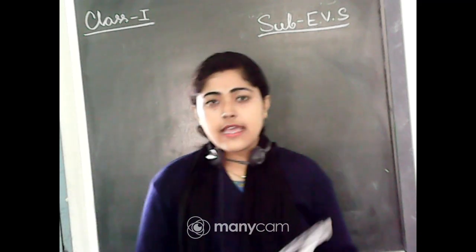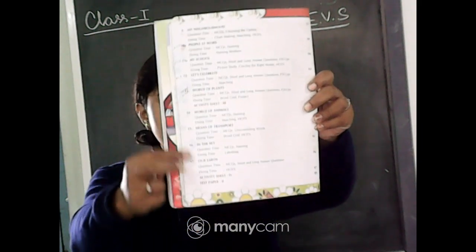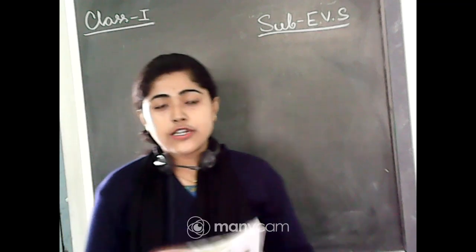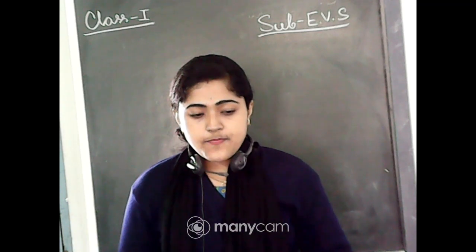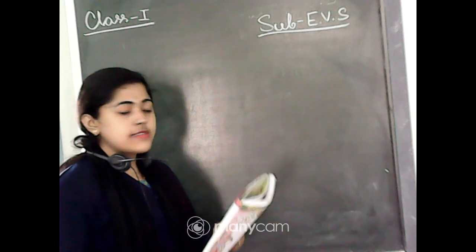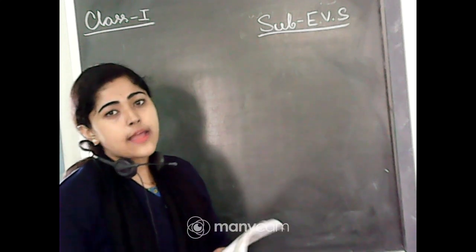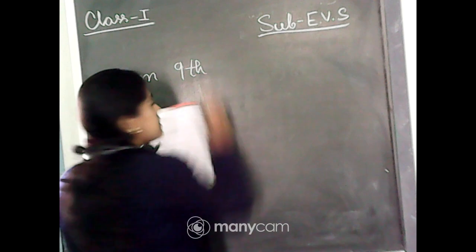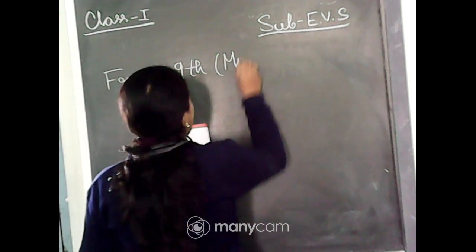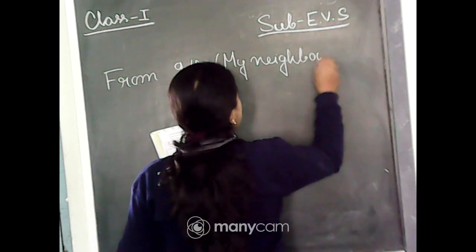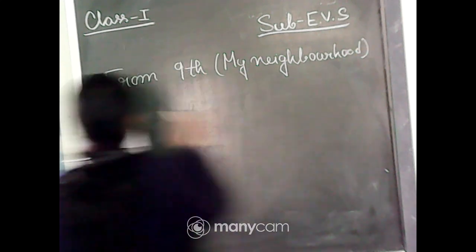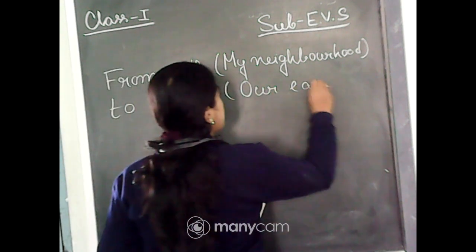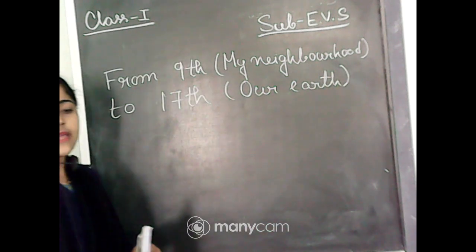You can check here in your book. Open the page where the chapter names are already written in the content part — the second page of the content in your book. Open it and mark those chapters which will be held in your Term 2 exam. From Chapter 9, My Neighborhood, to Chapter 17, Our Art, will be held in your exam.